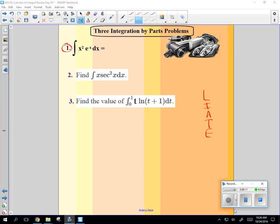LIATE is a memory tool where U's are up and DV's are down. L stood for log, like natural log. I stands for inverse. A was algebra. T was trig. E is exponent.